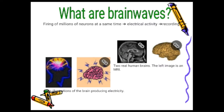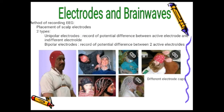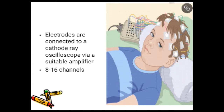When millions of neurons fire at a time, they produce electrical activity detectable by an electrode placed on the head. For recording EEG, two types of electrodes are used — unipolar and bipolar. In unipolar electrodes, the potential difference between an active and an indifferent electrode is recorded. In bipolar electrodes, the potential difference between two active electrodes is recorded. These electrodes are connected to a cathode ray oscilloscope via a suitable amplifier with 8 to 16 channels.